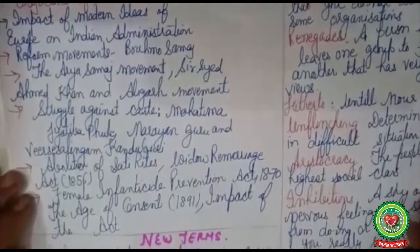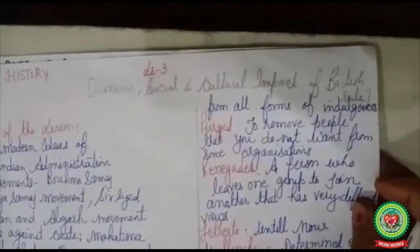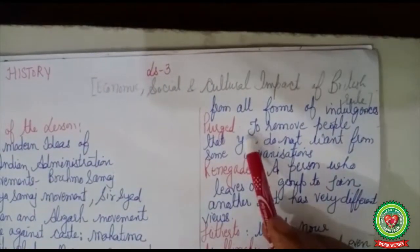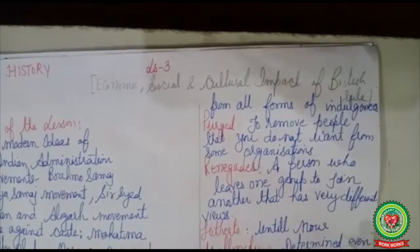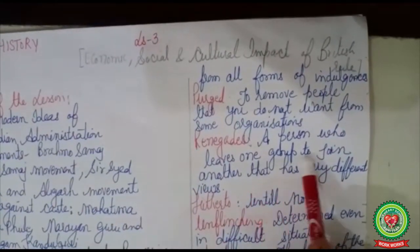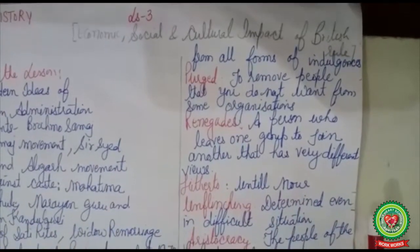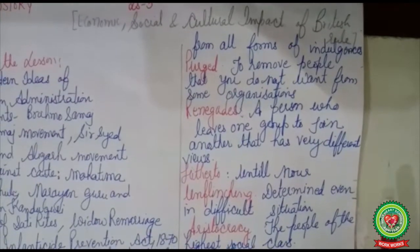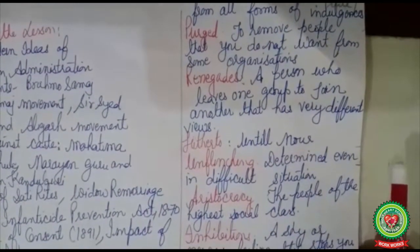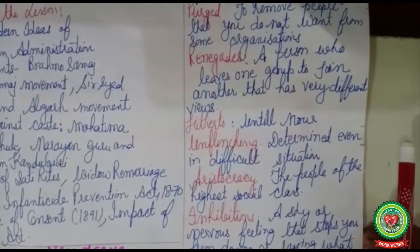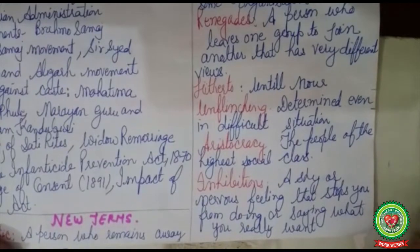Before going ahead we will go through the new terms of this lesson. 'Ascetic' means a person who remains away from all forms of indulgences. 'Purge' means to remove people that you do not want from an organization. 'Renegades' refers to a person who leaves one group to join another with very different views. 'Hitherto' means until now. 'Unflinching' means determined even in a difficult situation. 'Aristocracy' refers to people of the highest social class. And 'inhibitions' means a shy or nervous feeling that stops you from doing or saying what you really want.